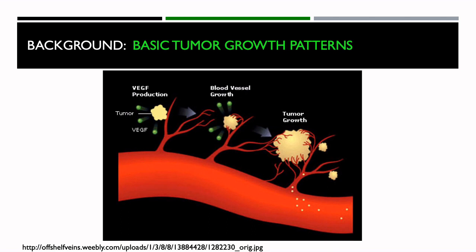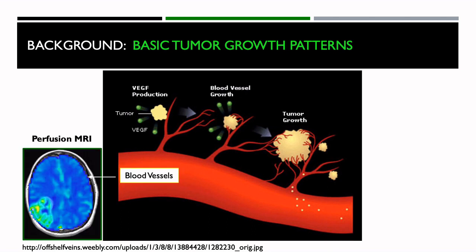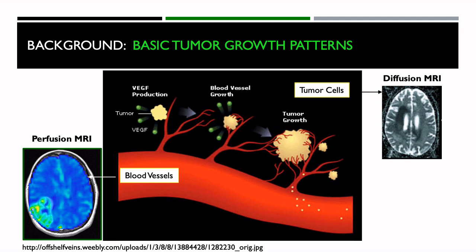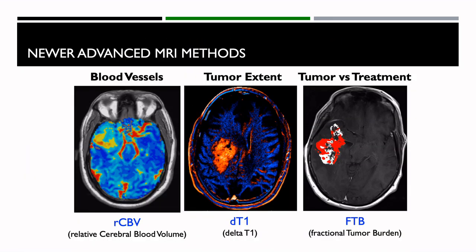Therefore, we have developed advanced MRI metrics, such as perfusion MRI, which looks at the perfused vessels throughout the brain, and diffusion MRI, which actually gives us information about tumor cells. I'm going to talk about blood vessel mapping, which we refer to as relative cerebral blood volume (RCBV), a method we've developed to better delineate the extent of tumor called the delta T1 map, and taking these two types of images together to create something called a fractional tumor burden map, which gives us a measure of tumor versus treatment.